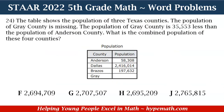So let's dive into our word problems. Remember, you can purchase your own workbook in our store. Number 24 says: the table shows the population of three Texas counties. The population of Great County is missing. The population of Great County is 35,553 less than the population of Anderson County. What is the combined population of these four counties?